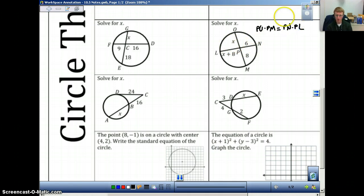PO times PM will be equal to PN times PL. And then, if you always write out your formula, then all you have to do is plug in what you know. So, I know that PO is X times, I know that PM is 8, equals PN is 6, times PL is X plus 8. So, now I solve 8X equals 6X plus 48. All I did was distribute this through. Now, I subtract 6X from both sides, and I'm left with 2X equals 48.